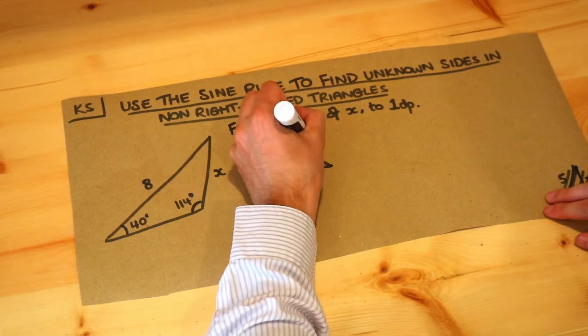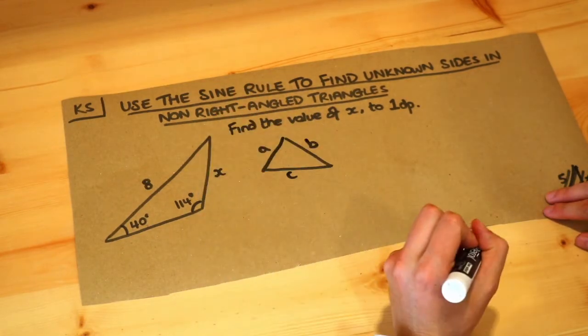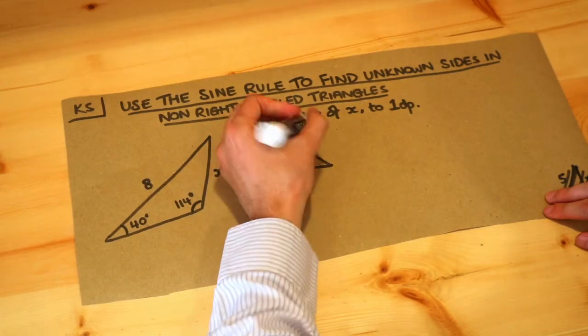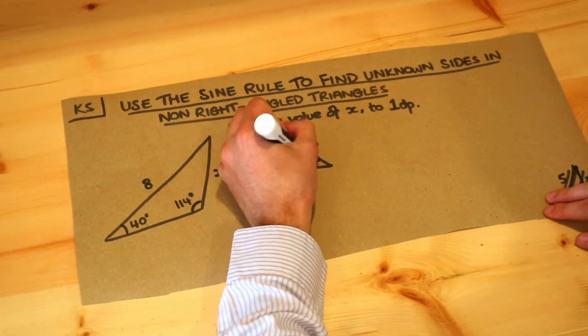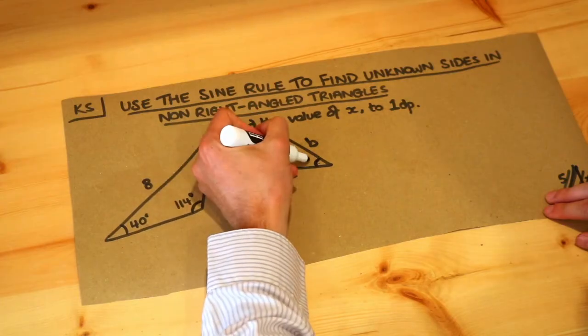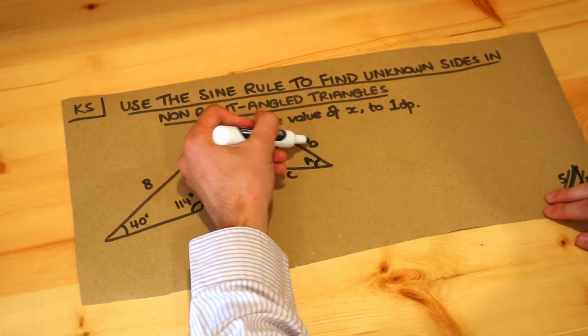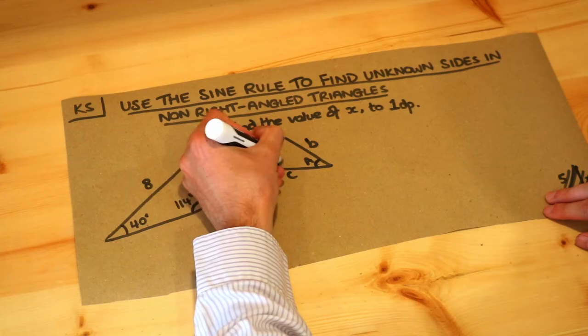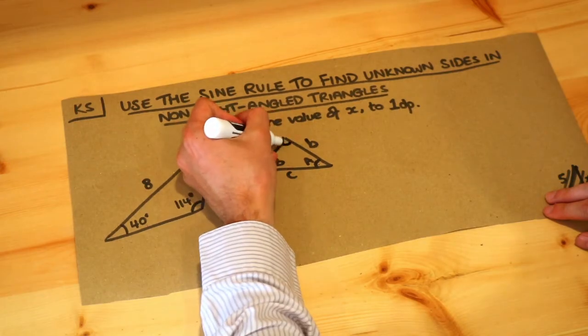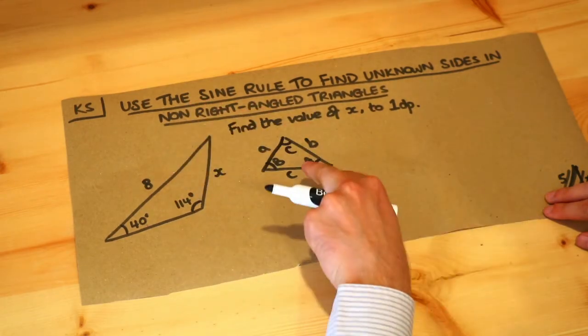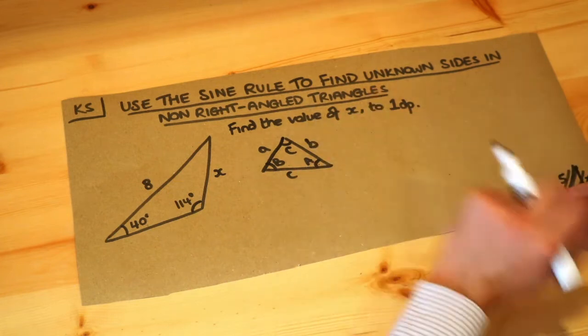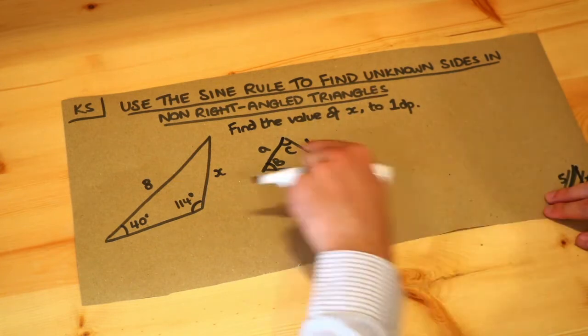Let's say we label the three sides of the triangle a, b, and c using lowercase letters. Then each side's opposite angle would be the capital form of that letter. So opposite a would be angle capital A, opposite b would be angle capital B, and opposite c would be capital C. That's how we label a non-right-angled triangle.